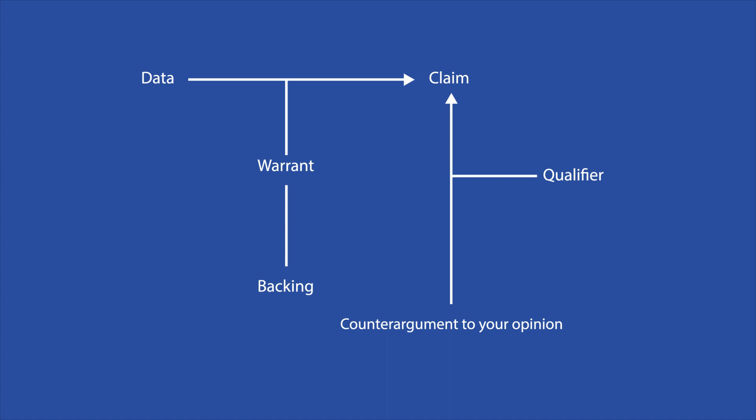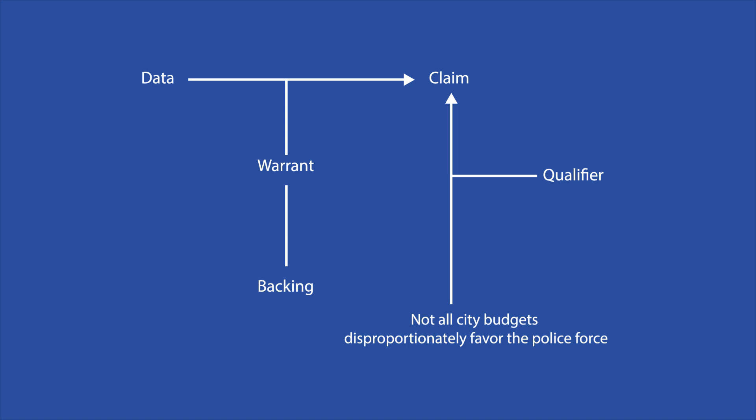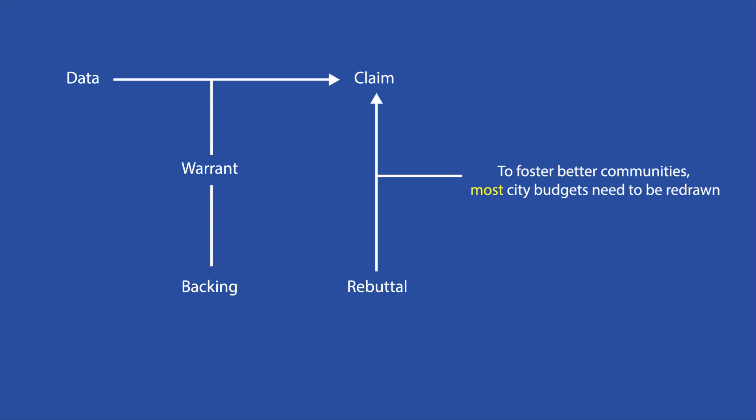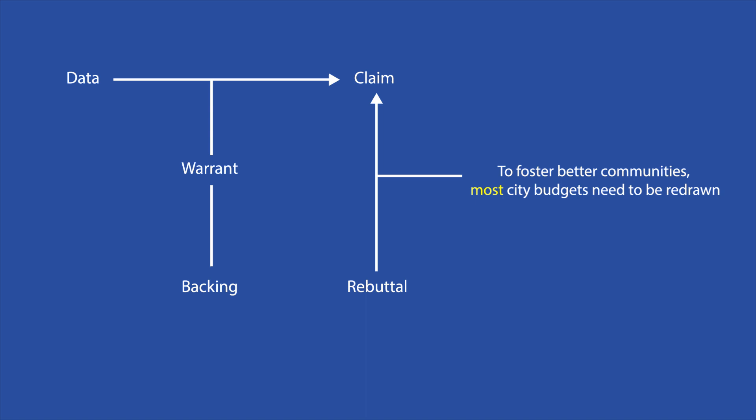Rebuttals, or counterarguments to your opinion, are needed to demonstrate how you've considered other perspectives. A rebuttal to the call for rebudgeting could be: "Not all city budgets disproportionately favor the police force." Thus, a qualifier can be added to convey the extent of the claim's universality, or how often the claim is applicable. Our previous claim, "To foster better communities, city budgets need to be redrawn," has an implied "all," making it seem as if we're arguing that all city budgets need to be redrawn. To avoid making this generalization, we can add "most" to our claim, so it becomes: "To foster better communities, most city budgets need to be redrawn."